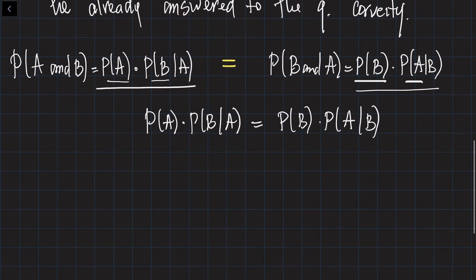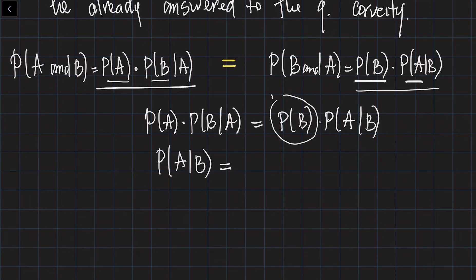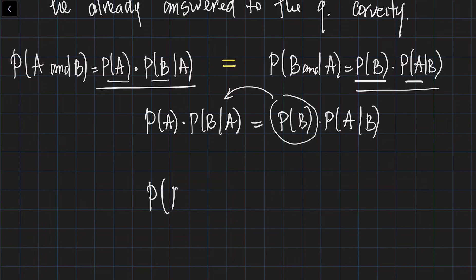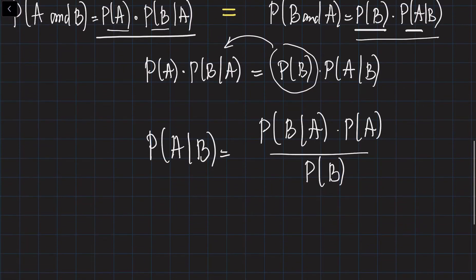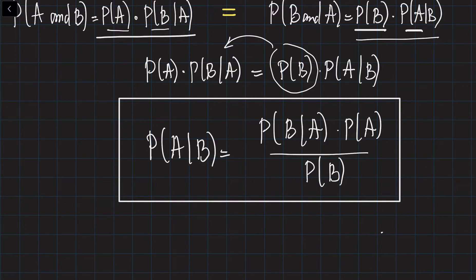So from here, I can find the probability of A given B. This is going to be equal to the probability of B given A, times the probability of A, divided by the probability of B. This is one of the important formulas in probability theory, which is called the formula of Bayes, or the Bayes theorem.